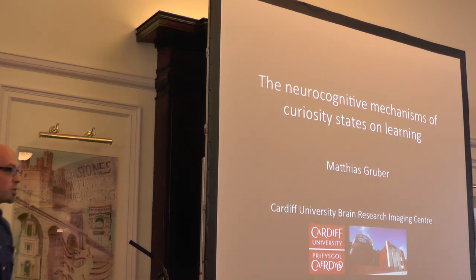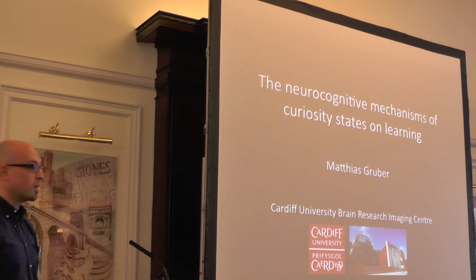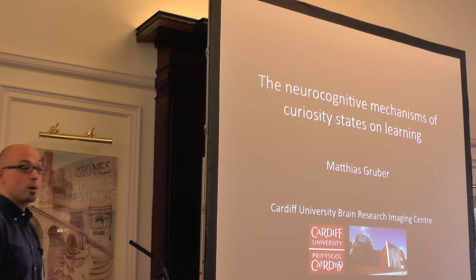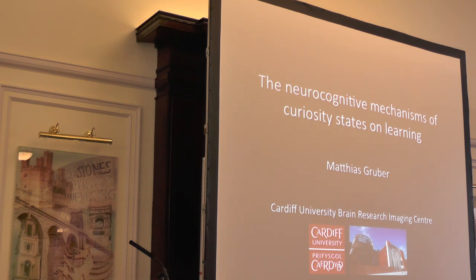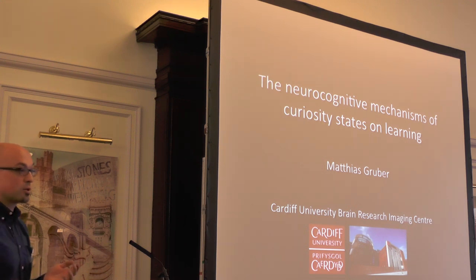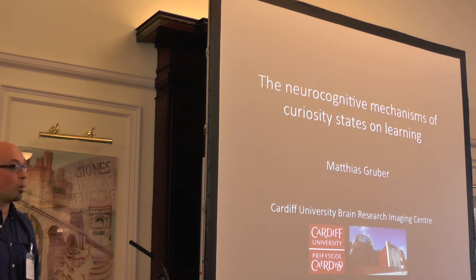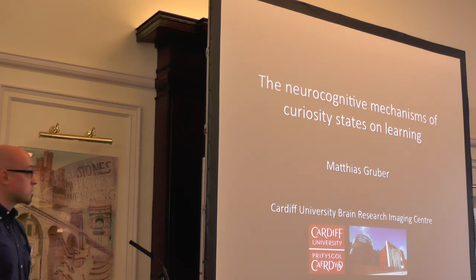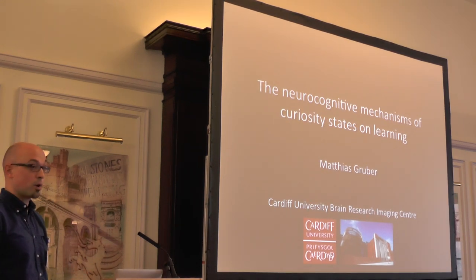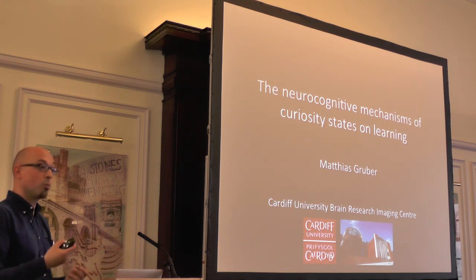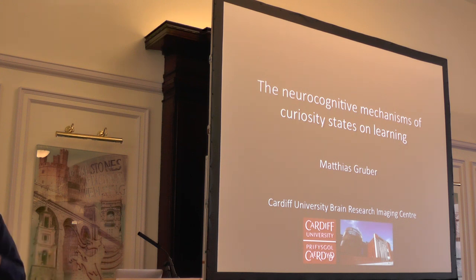Thank you to the organizers for hosting this great event, and thank you to all the speakers this morning who set the stage for the work I'm presenting today. I'm coming from a memory perspective — I'm a memory researcher. The key question every memory researcher is always asked: how can I improve my memory? Why do I remember some things but forget others that might be important? The critical question is what's the mechanism in the brain that prioritizes the information we want to remember compared to information that is less salient.